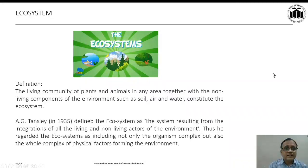A.G. Tansley, in 1935, first defined the ecosystem as the system resulting from the integrations of all the living and non-living factors of the environment. Thus, he regarded the ecosystem as including not only the organism complex, but also the whole complex of physical factors forming the environment.